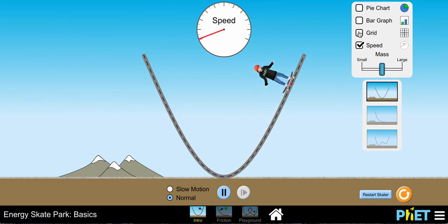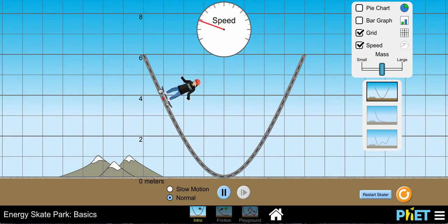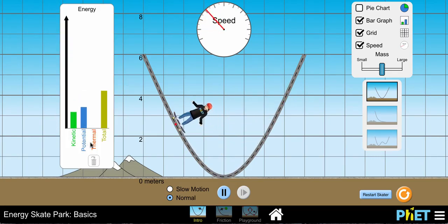We'll put the grid on there as well so you can tell where they stop here and compare those positions. And then the bar graph where you can see the kinetic, potential, thermal, and total energy.